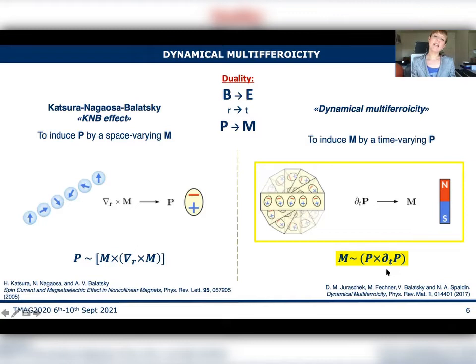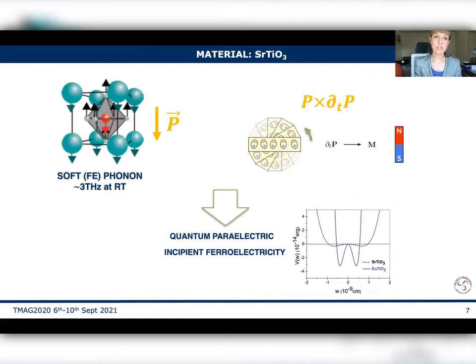So our idea is to use the polarization associated to the phonon to create such a magnetic moment. So that's why we chose strontium titanate, because associated to this soft phonon we have a strong electric moment polarization. Indeed, such a phonon is called ferroelectric. It would be the one responsible for the ferroelectric transition of strontium titanate, if you would ever experience it.